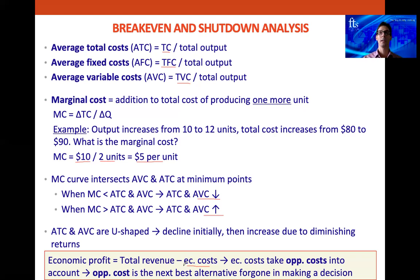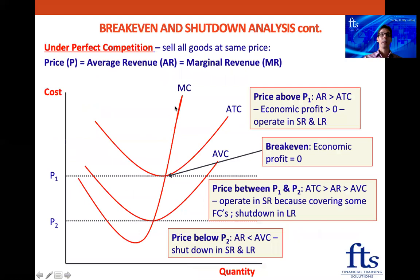So economic profit is different from accounting profit. Under perfect competition, we sell all goods at the same price, so price equals average revenue. It also equals marginal revenue, because if every unit sells at the same price, what we get from selling the next unit is the same as the price.